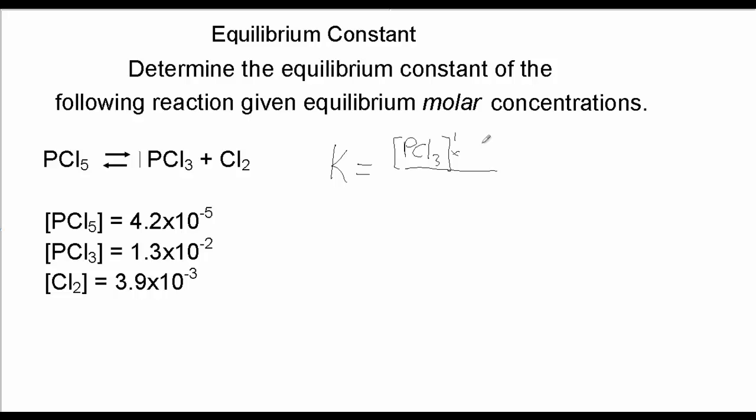Multiplied by the molar concentration of Cl2, raised to the first power also. And in the denominator we have PCl5, also raised to the first power because of the coefficient of one.